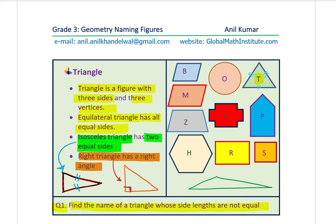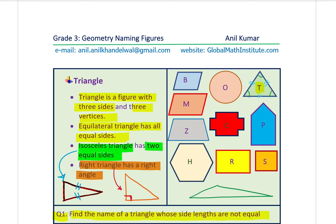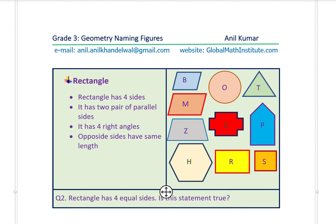So a triangle has three sides and three corners, which means three angles. The sides could be equal or not equal, and based on that we have special names for some triangles. Now let's talk about rectangles.